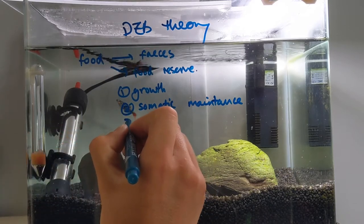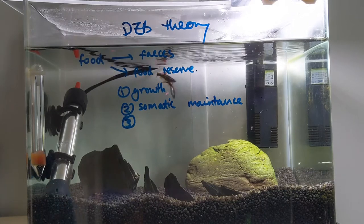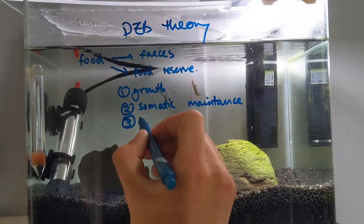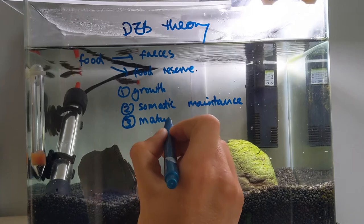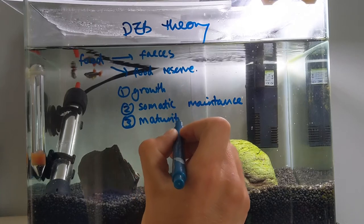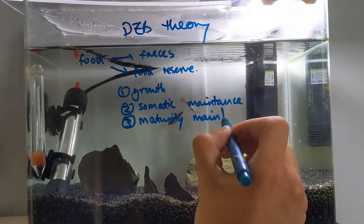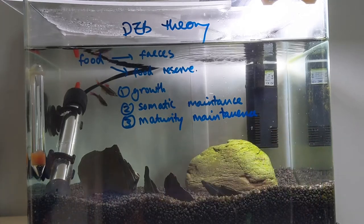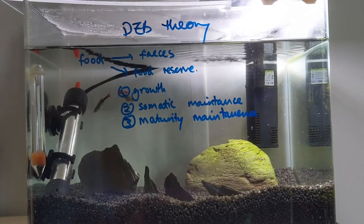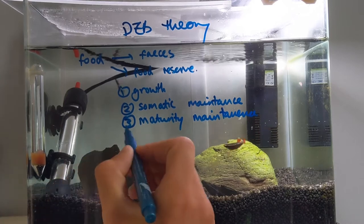Additional energy left over from these two points will be first put into what's called maturity maintenance. Maturity maintenance is basically the body's defence system — so, its immune system.